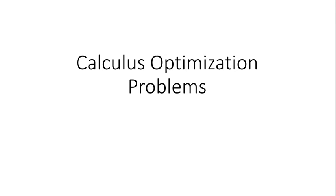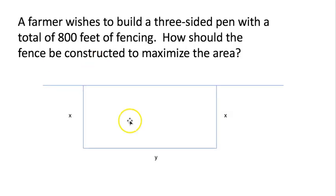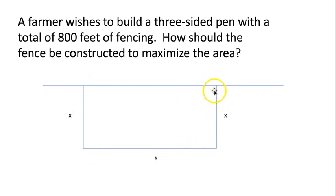This is Bob Capetta and this lesson is on calculus optimization problems. We have a farmer who wishes to build a three-sided pen with a total of 800 feet of fencing. How should that fence be constructed to maximize the area? So three sides — the fourth side we can assume is the wall of a building. He has 800 feet to build that fence. How should he build it to get the biggest possible pen?